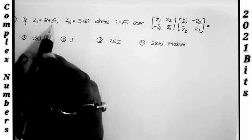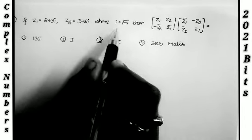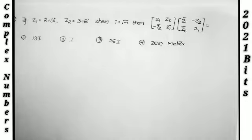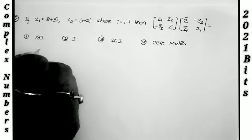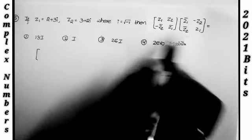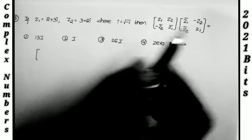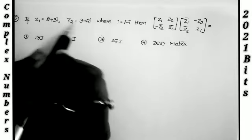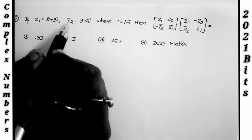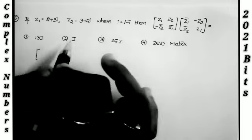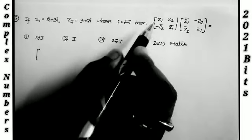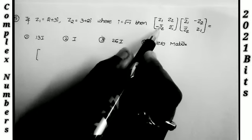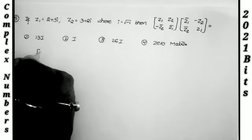Next: if z₁ = 2 + 3i and z₂ = 3 + 2i, find the product of two given matrices. The matrices contain z₁, z₂ and their conjugates z₁-bar = 2 − 3i and z₂-bar = 3 − 2i as elements. I substitute the values into the matrix expression.